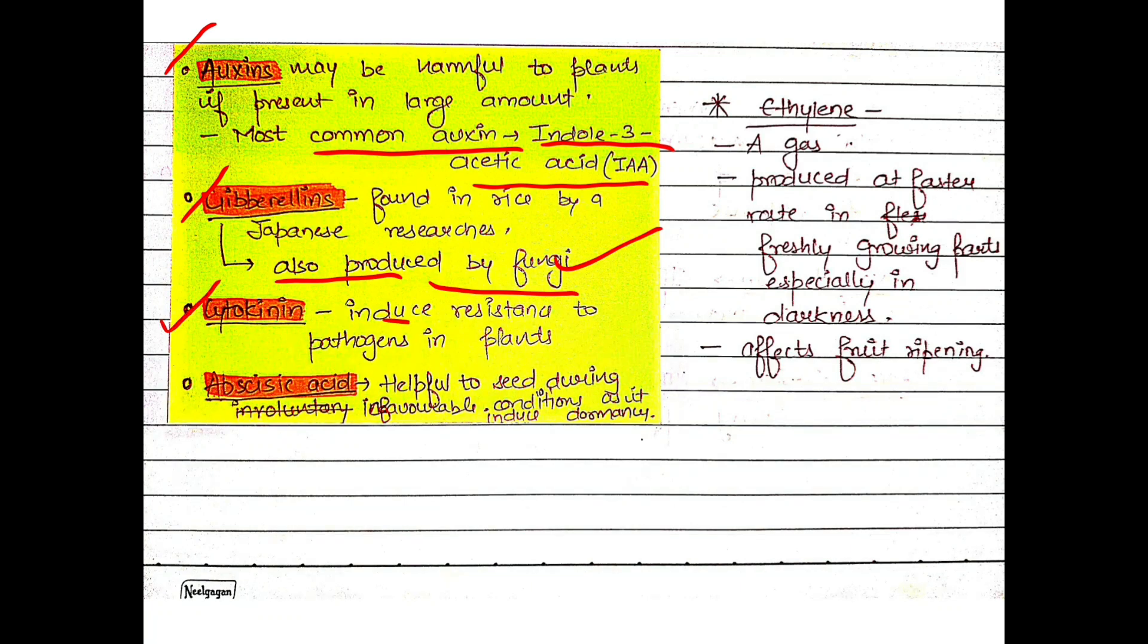Next is cytokinin. Cytokinin induces resistance in plants against pathogens, so it will increase the resistance in plants so that plants can fight against pathogens. Next is Abscisic Acid. Abscisic Acid is helpful to seed when there are unfavorable conditions. If the seed is in an acidic medium and breaks dormancy, the plant bud can be killed. So Abscisic Acid increases dormancy. Next is hormone ethylene. Ethylene is a gaseous hormone. In freshly growing plants, it is produced at a faster rate. In darkness, it is produced even more. It affects fruit ripening. Fruit ripening increases with ethylene gas.